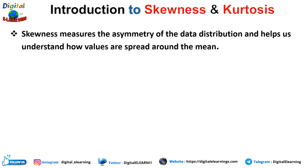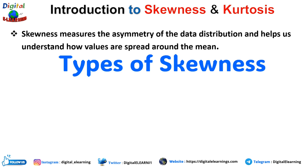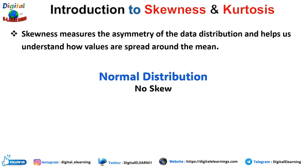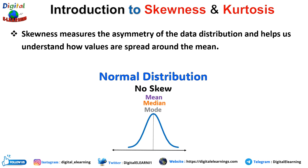Now let us understand the three different types of skewness. We start with the very famous normal distribution, which has no skew in it. So in this case, your mean, median, and mode will be equal.